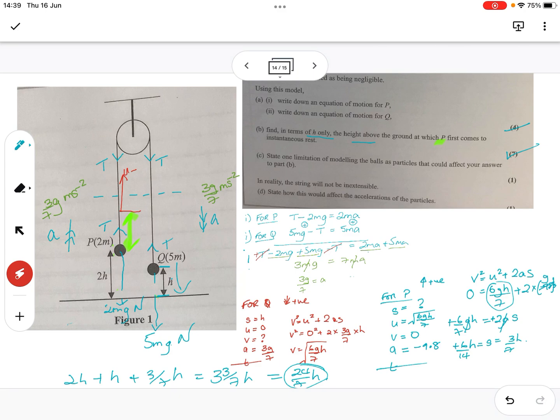And then, it says, in reality, the string is not inextensible. State how this would affect the celebration of the particles. Now, normally, I would have said, inextensible means acceleration is the same. But what they want you to say is that, basically, it's not, it's, the acceleration of the balls would not be equal. You want to say that each of them, P and Q, would have different acceleration, or have a different magnitude of acceleration, if it was in, if it was not inextensible.